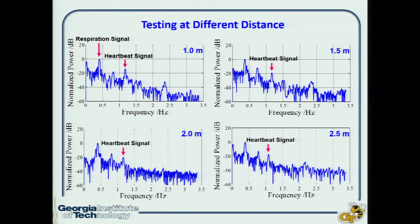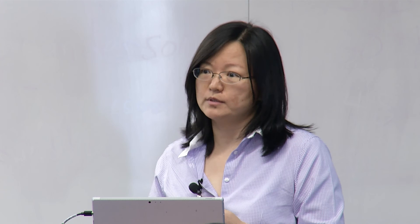Here is the testing result of our system. The test was conducted as the human subject moved from 1 meter to 1.5 meters, 2 meters, and 2.5 meters. At all these distances, our system can reliably detect the respiration signal — which is the most obvious signal — and the heartbeat signal. If the application requires longer distance, we can also achieve that with some modification to our design. We also tested our system with the detection system facing different orientations of the human subject: front, back, left, and right, to verify we can detect these signals regardless of subject orientation.